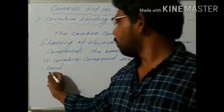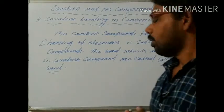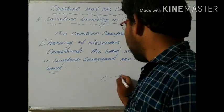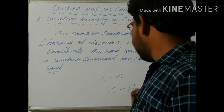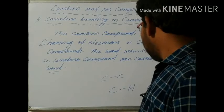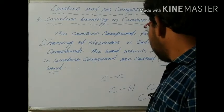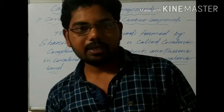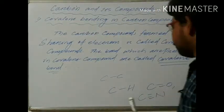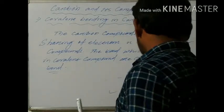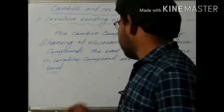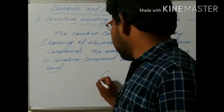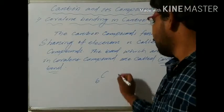Covalent bonds are formed by the sharing of electrons. Carbon shares bonds with carbon atoms or with other elements like hydrogen, oxygen, and nitrogen — both the same elements and different elements. Because carbon's outermost shell has four electrons. The atomic number of carbon is 6. In those six electrons, the first shell (K) has two electrons and the second shell (L) has four electrons.